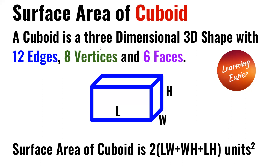A cuboid is a 3D shape with 12 edges, 8 vertices, and 6 faces.